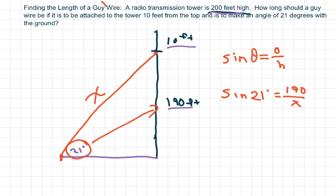And cross multiply, so you get x equals 190 over sine of 21 degrees, and this is going to be approximately 530.18 feet. Okay, that's all. Thank you, have a nice day, bye bye.